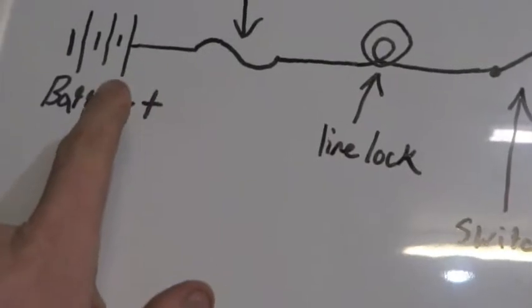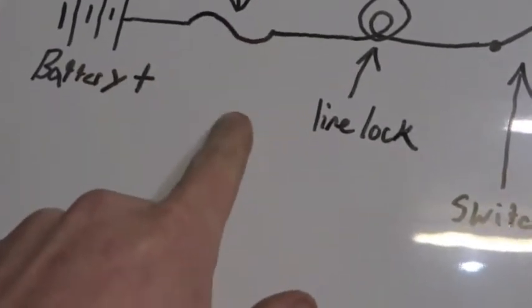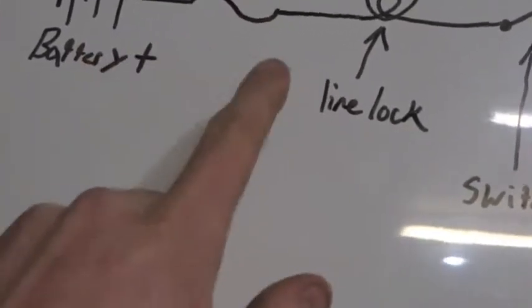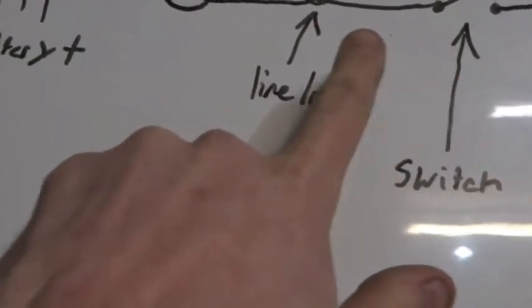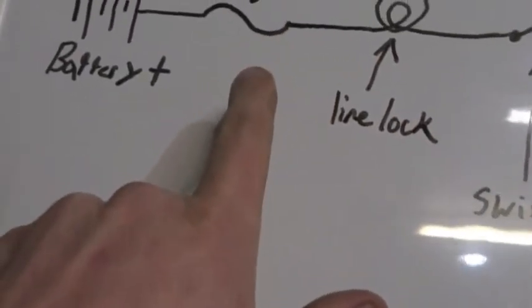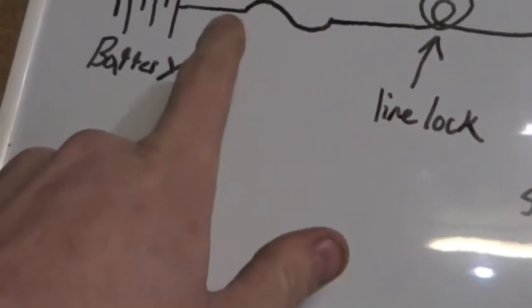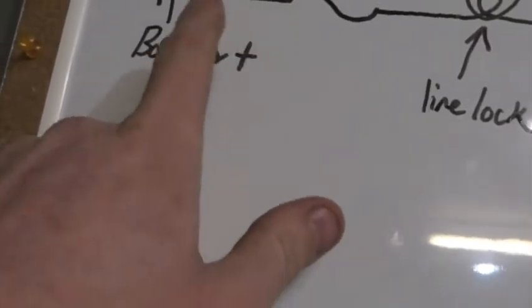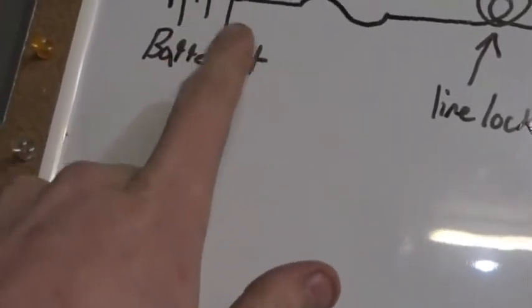From the battery, we're going to go to a fuse. You want the fuse closest to the battery. That way, if any of this ever touches ground, it pops the fuse because if it touches ground right here, it won't pop the fuse. Melt the wire, get really hot. Bad things will happen.